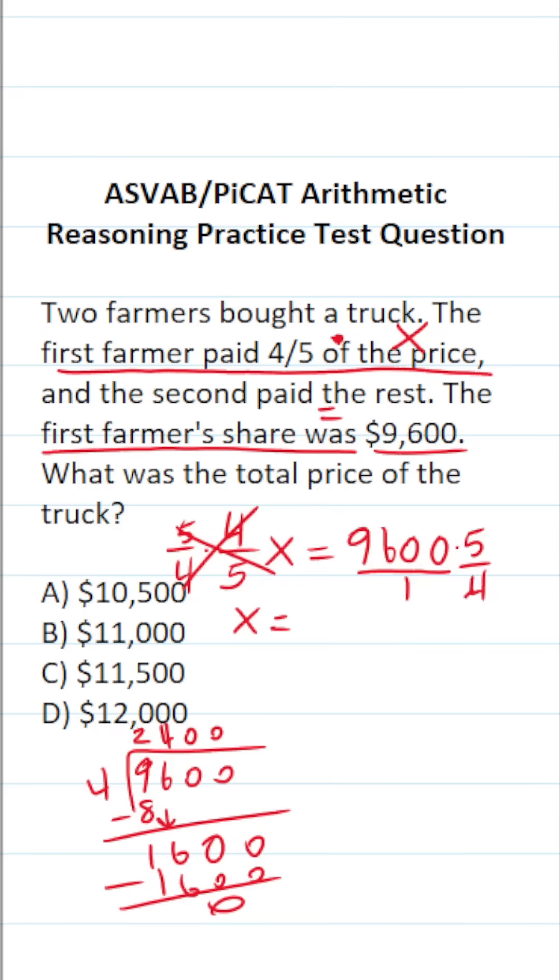In other words, four goes into four one time. Four goes into 9,600 2,400 times. This becomes 2,400 over one. Again, 2,400 divided by one is just 2,400 times five over one, which is five.